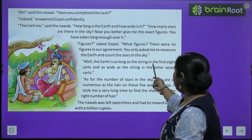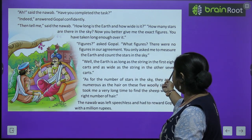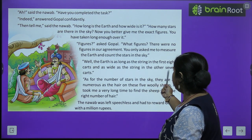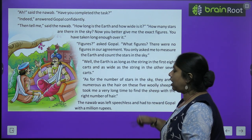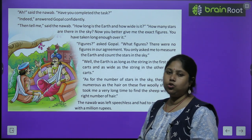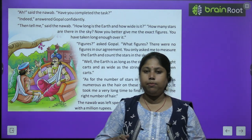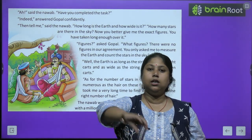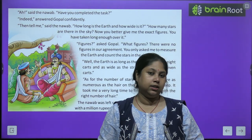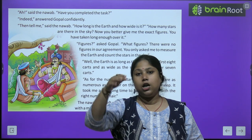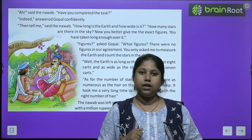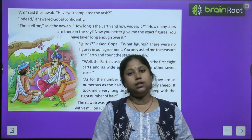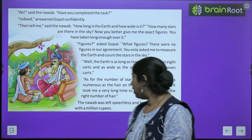'Well,' said Gopal, 'the earth is as long as the string in the first eight carts, and as wide as the string in the other seven carts.' So according to Gopal, the length of the earth equals the string in the first eight carts, and its breadth equals the string in the remaining seven carts.